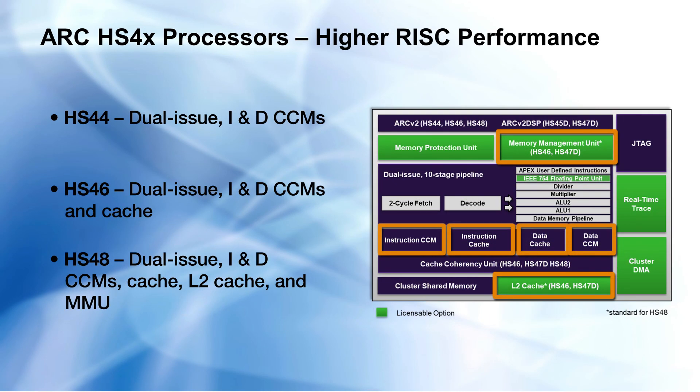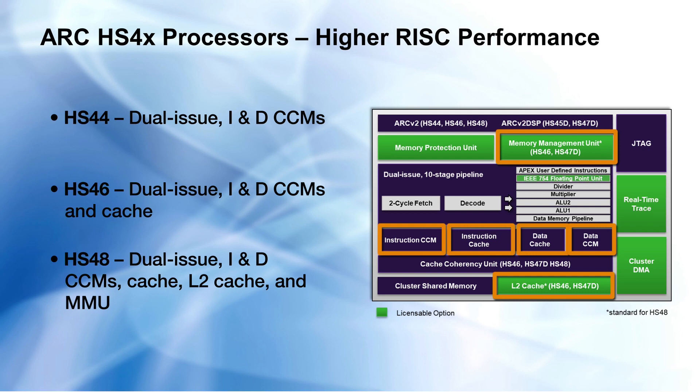The family also includes the superscalar HS4X cores — HS44, HS46, and HS48 — which are similar in function to the HS3X cores but deliver 40% higher RISC performance. The HS4XD cores include the HS45D and HS47D, which add 125 signal processing instructions, delivering 2x higher DSP performance.